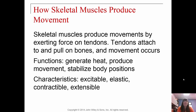Generating heat, producing movement, stabilizing body positions — those are the key functions. Characteristics of muscle tissue: it's excitable, elastic, contractable, and extensible. Basically, action potentials can excite it, and it can contract and return to its original shape. It can also stretch and return to its original shape.